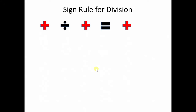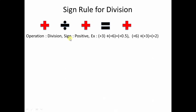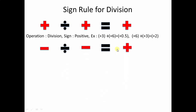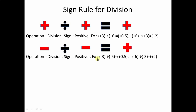Next we move on to the sign rule for division — it's exactly the same as multiplication. A positive number divided by a positive number gives a positive result. And when you divide a negative number by a negative number, you again get a positive sign. So minus 3 divided by minus 6 gives positive 0.5.